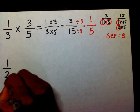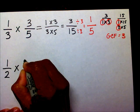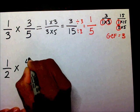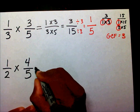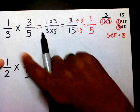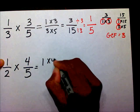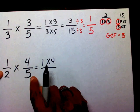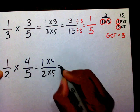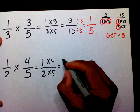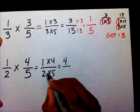One-half times four-fifths. I'm going to multiply my numerators, which is one times four. Then I'll multiply my denominators, which is two times five. Well, one times four is four, and two times five is ten.